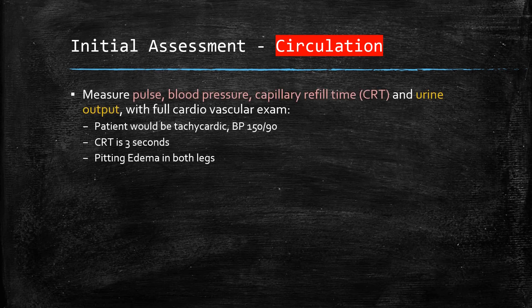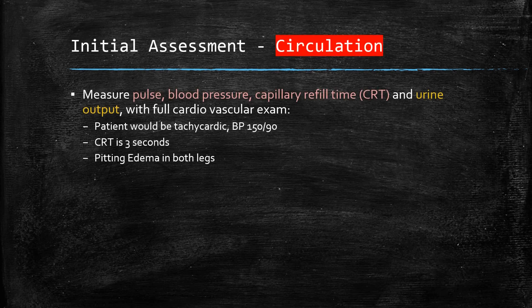C is for circulation. Measure the pulse, blood pressure, capillary refill time, and urine output, as well as carrying out a full cardiovascular exam. The patient would be tachycardic — the decrease in PO2 is detected via the carotid bodies, which increase the respiratory rate via feedback to respiratory centres in the medulla, and this also feeds into tachycardia. Oedema results from increased movement of fluid from the intravascular to the interstitial space, due to decreased cardiac output activating the RAA system, increasing venous and capillary hydrostatic pressure, causing pitting oedema.